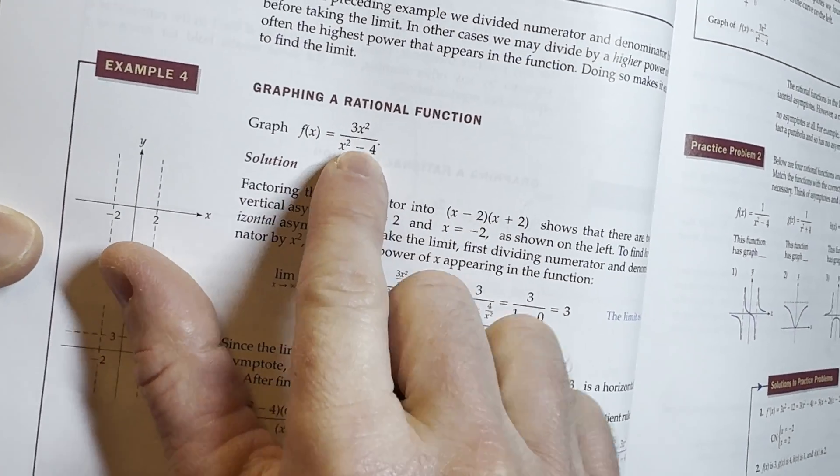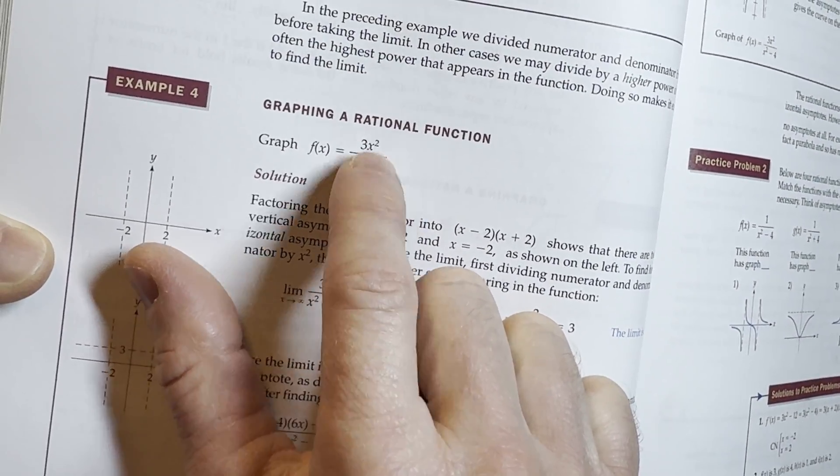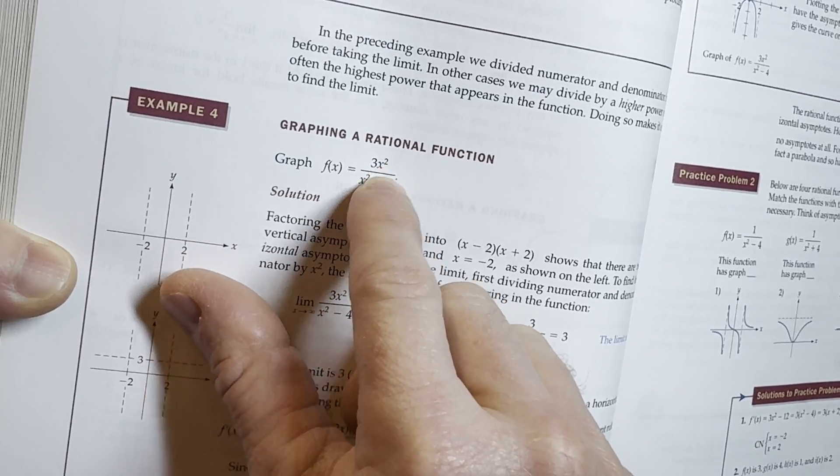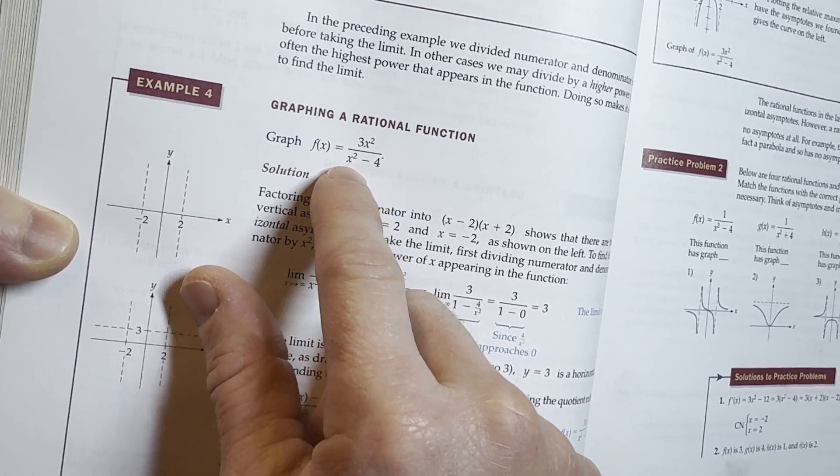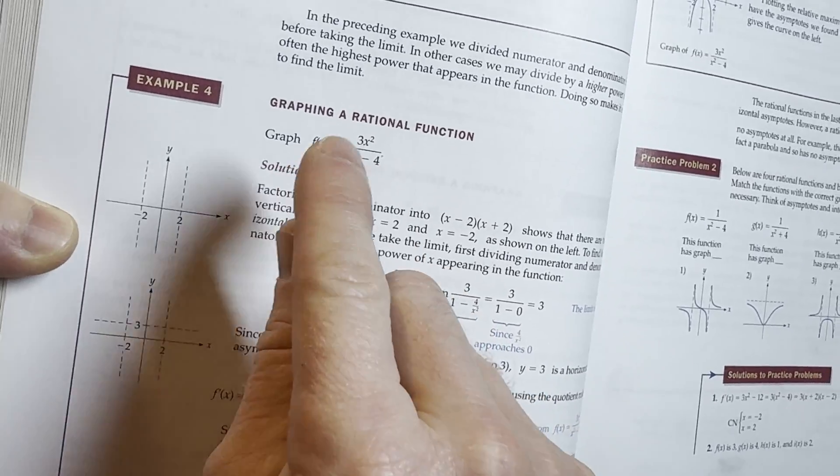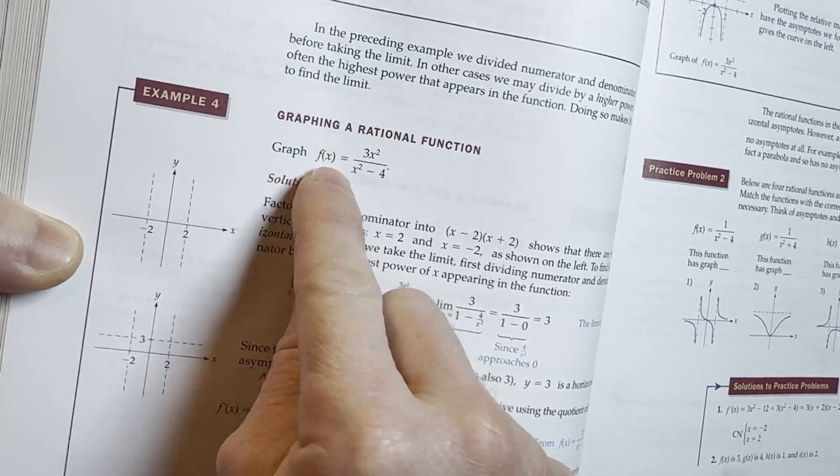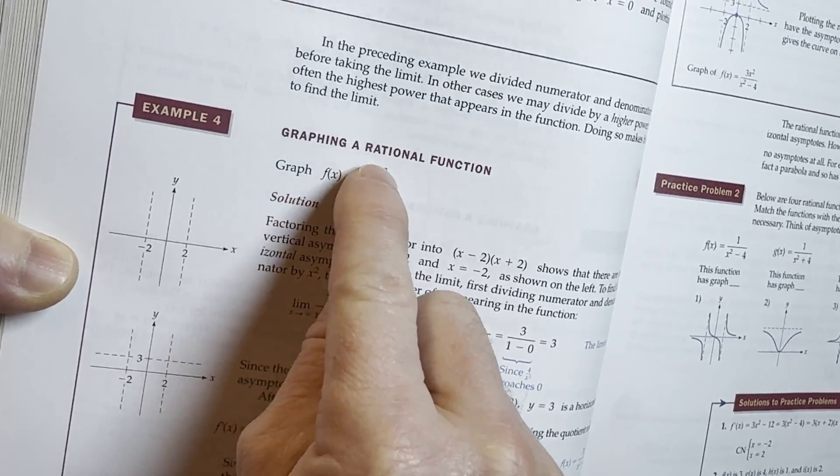You know that because the exponents are the same. You see two and two. The degree in the numerator is the same as the degree in the denominator. And so when that happens, the horizontal asymptote is going to be the ratio of the leading coefficients. So it'll be y equals three over one, which is three.